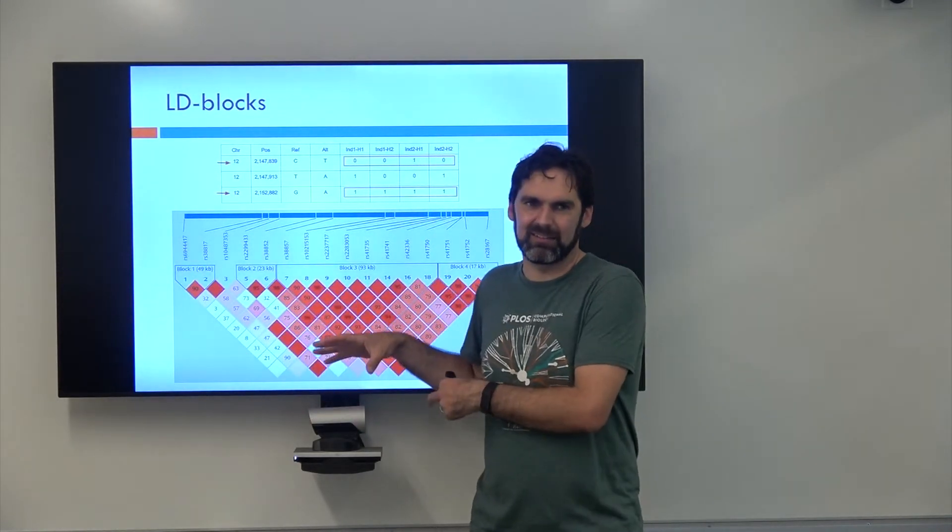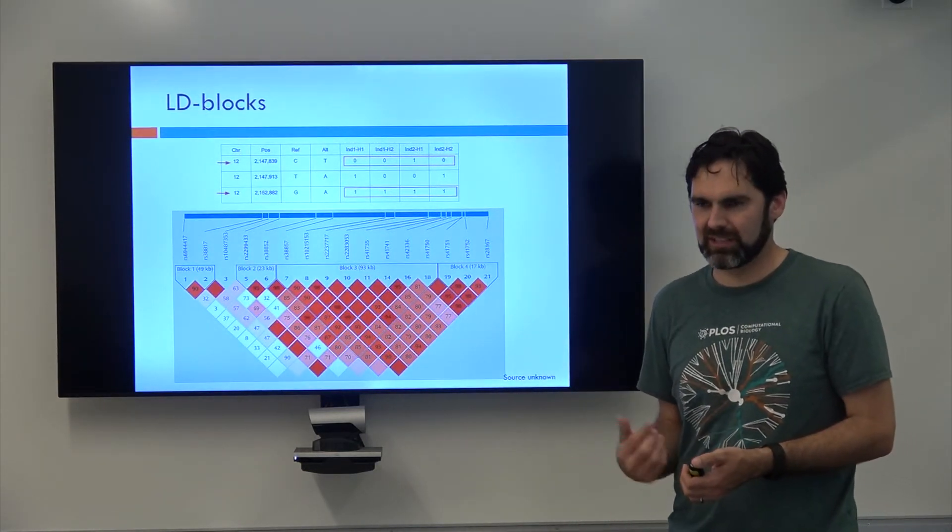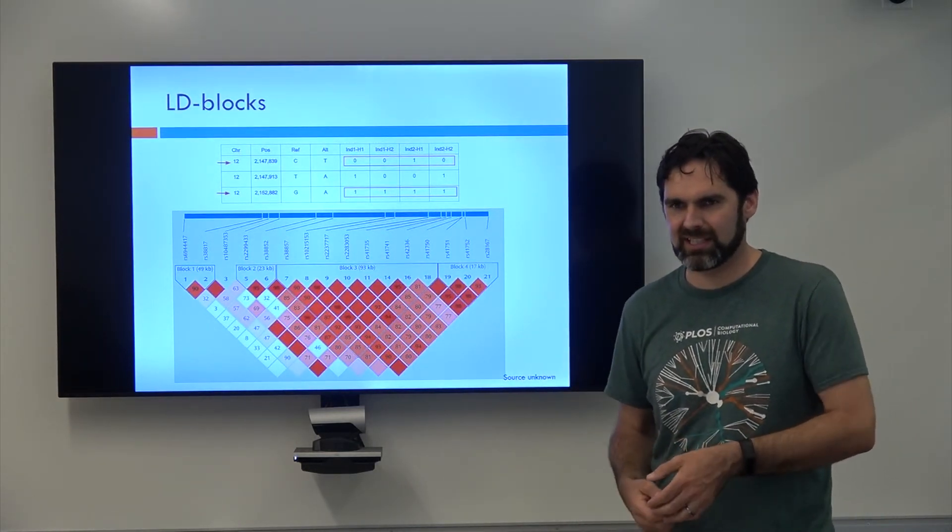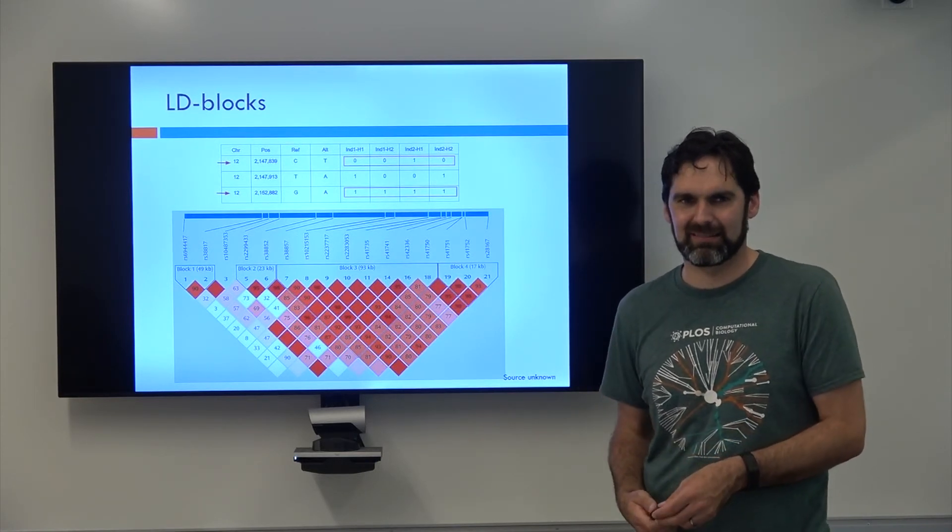However, inside the blocks there's still a lot of LD. So any implication of the genome where you just have recombinations occurring more often than you would expect by chance, to a first approximation, is a hotspot.